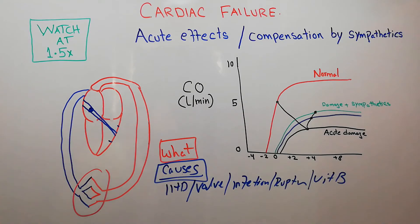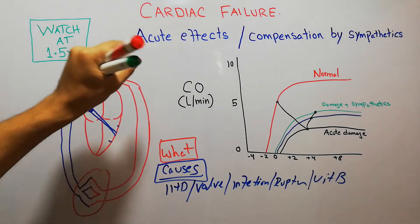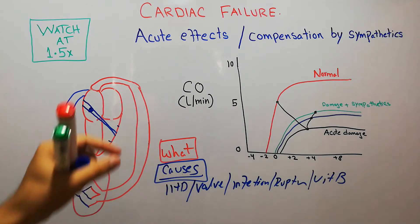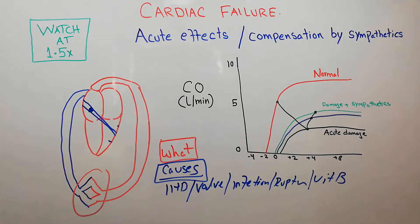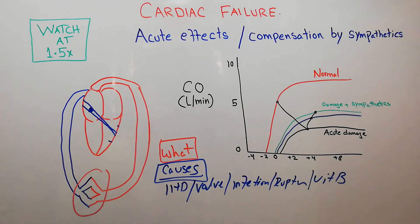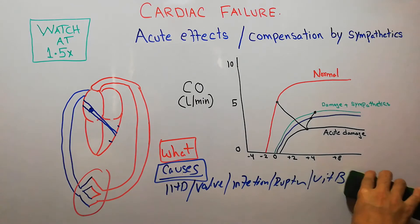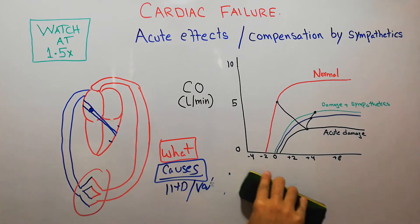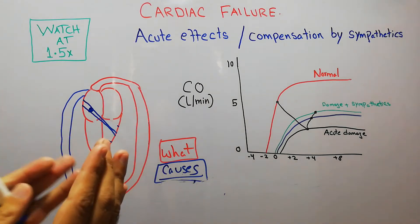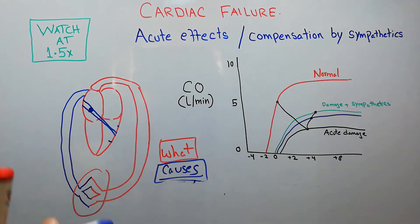Additional causes include rupture of valves or muscle walls. Some causes like ischemic heart disease can cause cardiac failure suddenly — these are called acute heart failure, which is the main focus of this lecture. Other causes may occur slowly or suddenly due to valve damage, infection, rupture, or vitamin deficiency. Today we discuss moderate acute cardiac failure.